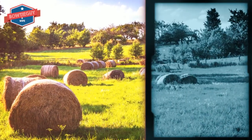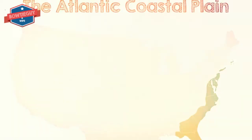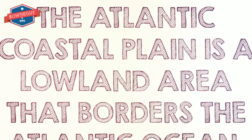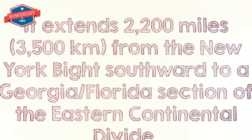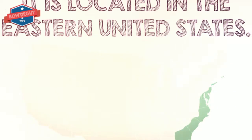Today we're going to be talking about the Atlantic Coastal Plain. The Atlantic Coastal Plain is a lowland area that borders the Atlantic Ocean. It extends 2,200 miles from the New York Bight southward to the Georgia-Florida section of the Eastern Continental Divide. It is located in the Eastern United States.